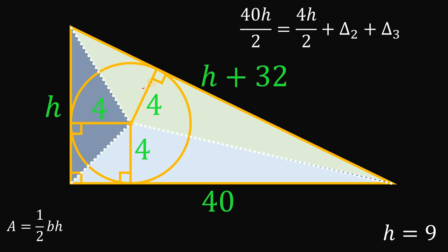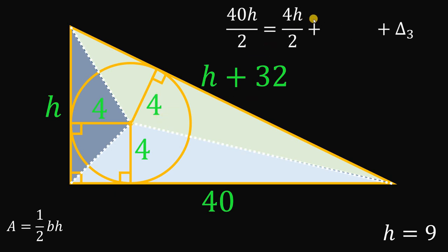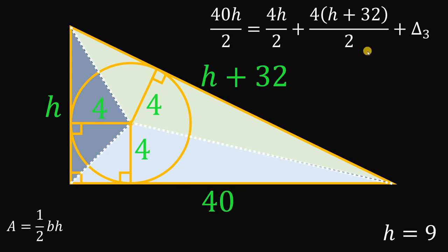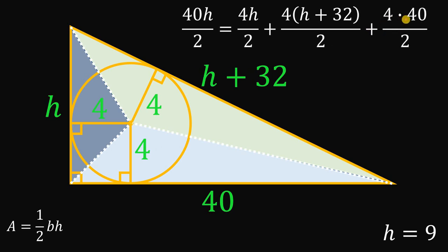The area of the second triangle has base h plus 32 and height 4, so the area equals 4(h + 32) divided by 2. For the third triangle, the base is 40 and the height is 4 units, so the area equals one-half times 4 times 40.